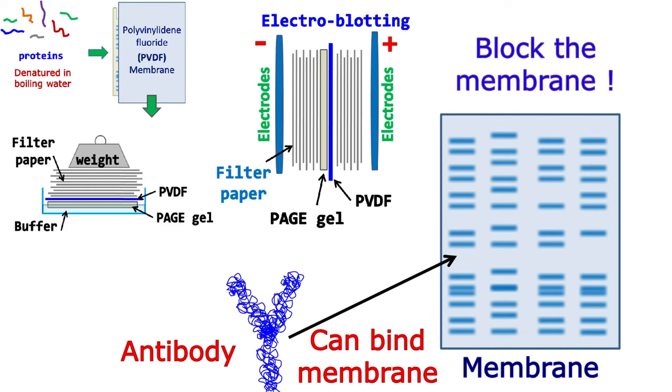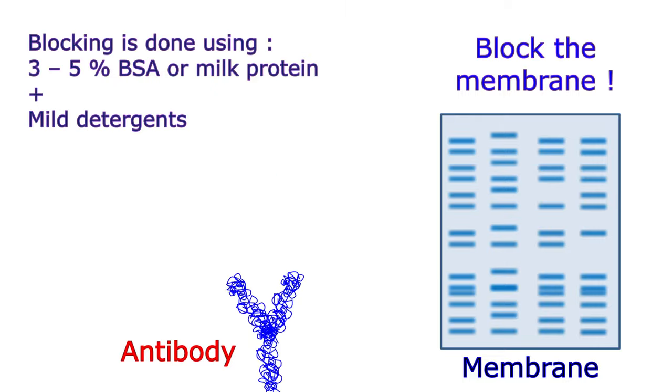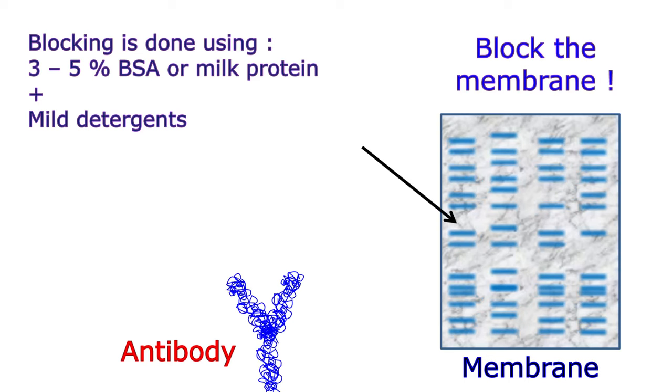This is done by treating the membrane with dilute BSA or milk protein along with mild detergents. These proteins bind other parts of the membrane except the regions where the protein bands are present. This process is known as blocking of the membrane.